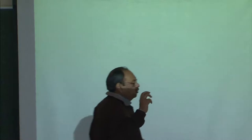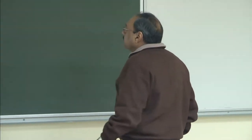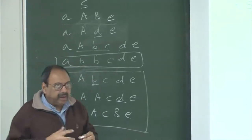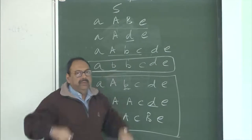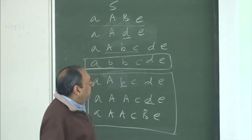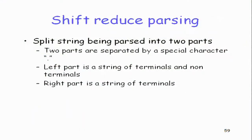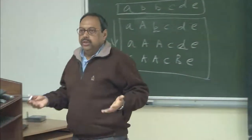Shift-reduce parsing: when you take any string and want to do a reduction, conceptually there are some parts you have seen and once you have seen some part you do a reduction. Let us put some imaginary symbol — a dot — in the middle of the string. The two parts separated by the dot: the left-hand side of the dot is a string of terminals and non-terminals, and the right of the dot is always a string of terminals.